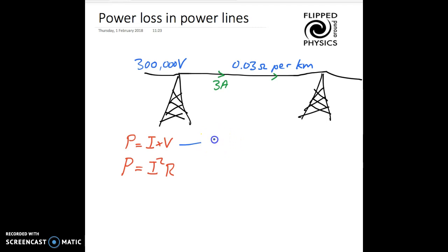So we could plug in the numbers. So the current is three times 300,000, which is obviously 900,000 watts. This is the transmitted power.